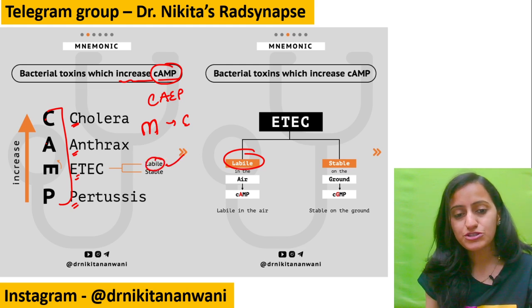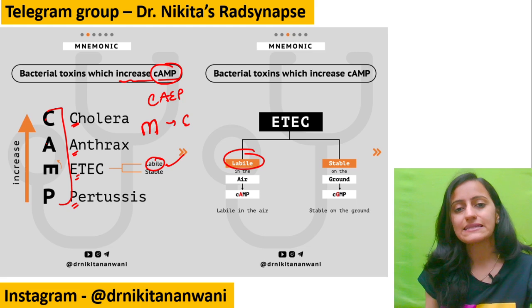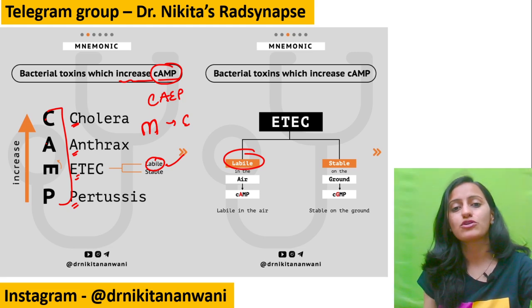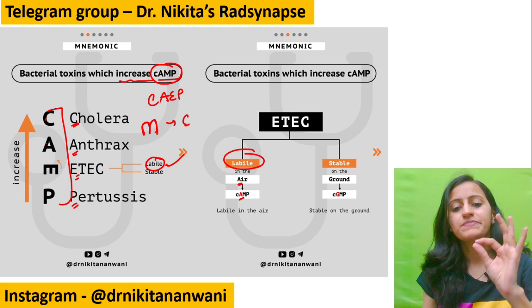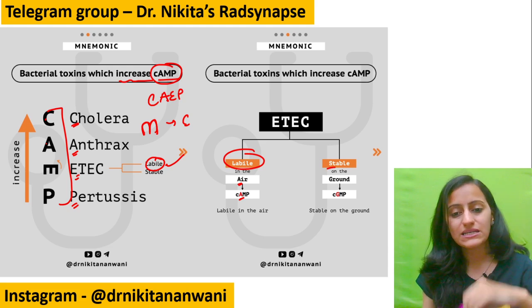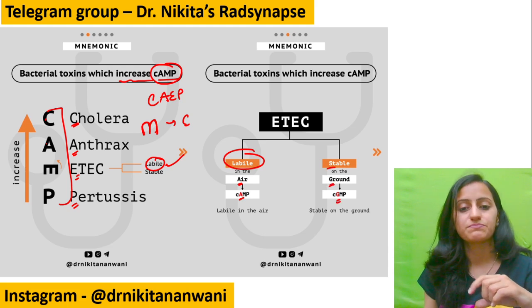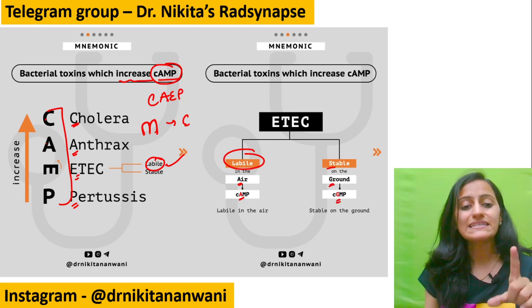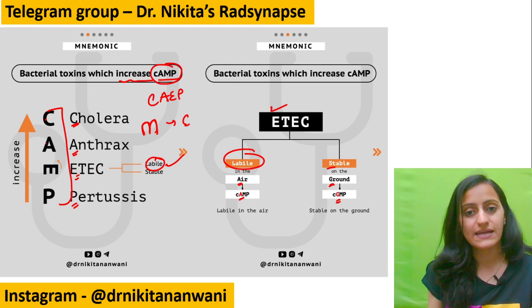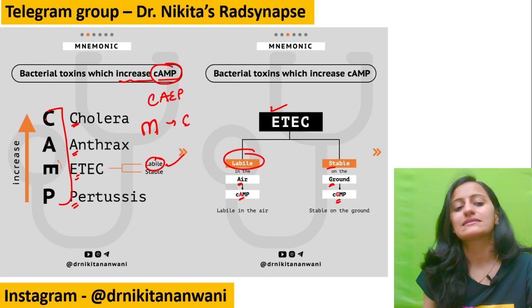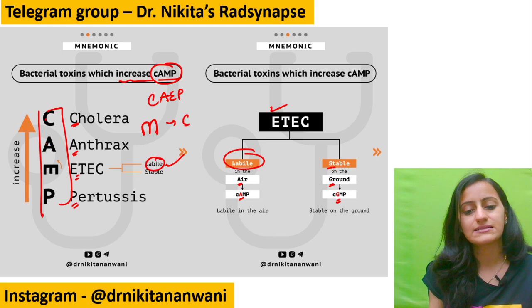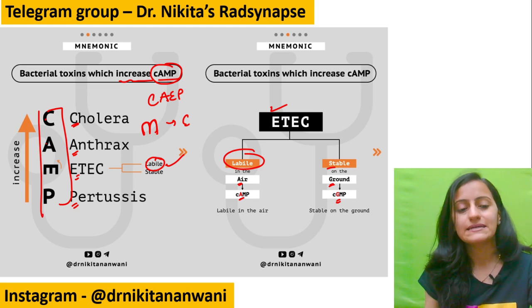The trick to remember labile vs. stable: labile is in the air, stable is on the ground. Labile in the air — A for cyclic AMP. Stable on the ground — G for cyclic GMP. So the heat-labile toxin increases cyclic AMP, and the heat-stable toxin increases cyclic GMP.